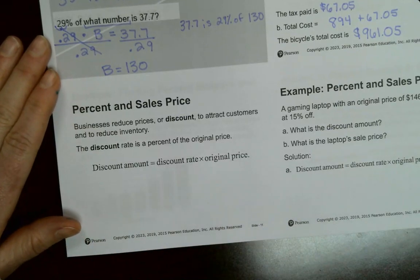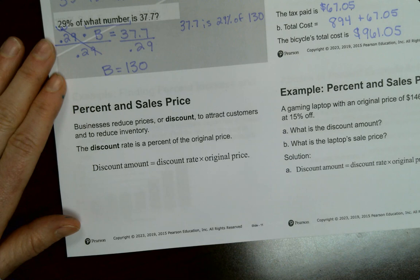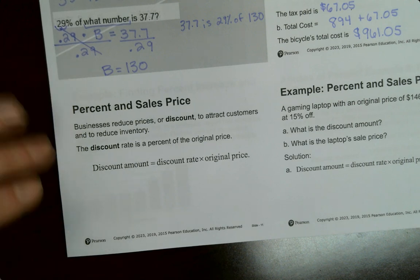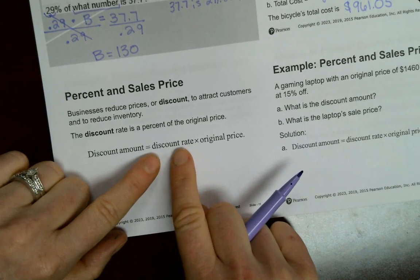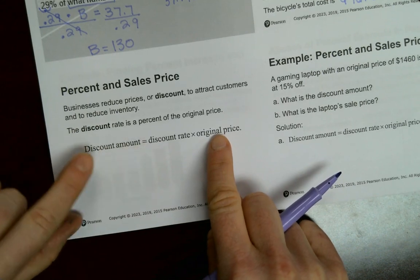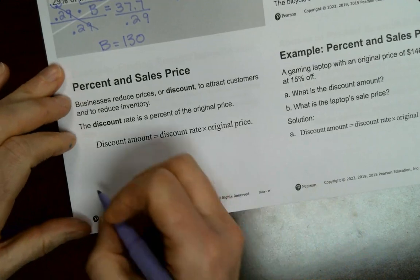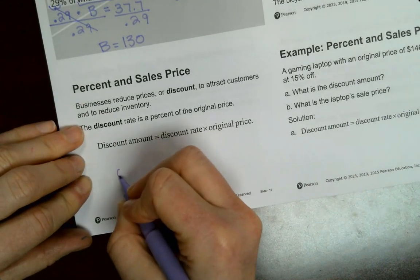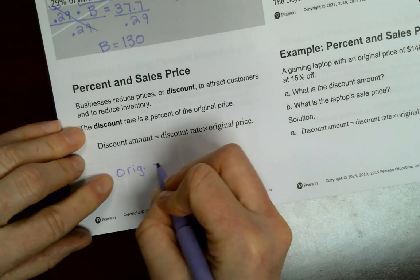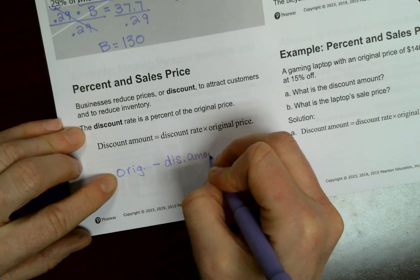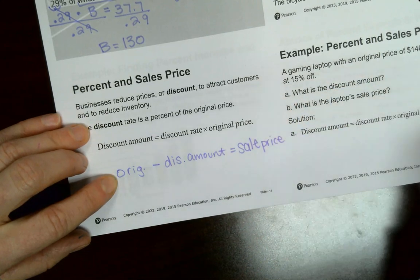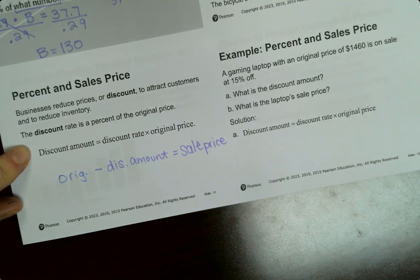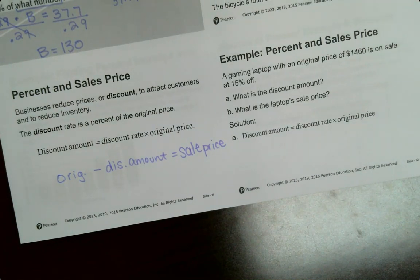Percent in sales price. Businesses reduce prices or discount to attract customers and to reduce inventory. Discount rate is a percent of the original price. So sometimes you'll walk into the store will be like 25% off all shirts or 75% clearance. So you've got to know what your discount rate is and then you've got to multiply it times your original price to come up with your discount amount, then you have to subtract it. So you'd have to do your original price minus your discount amount. That'll get you your sale price. So once you find your discount amount, you have to take that away or subtract it from your original price of that item.